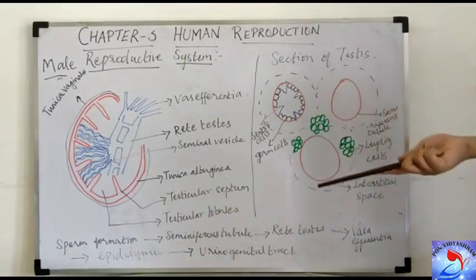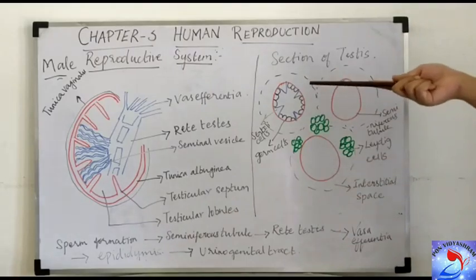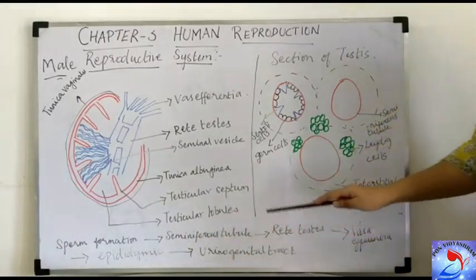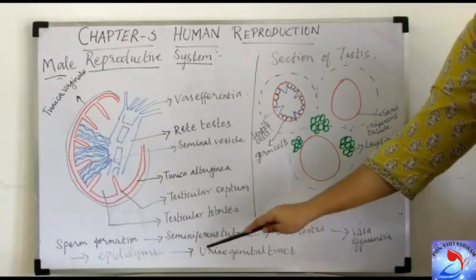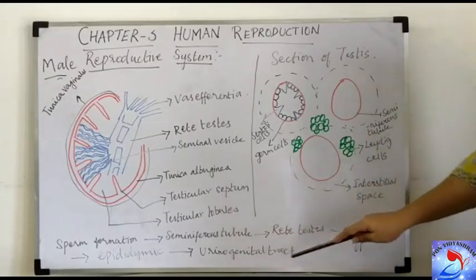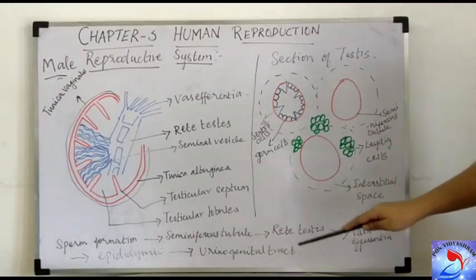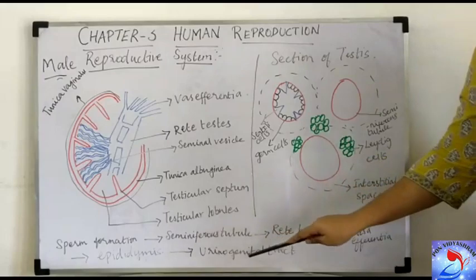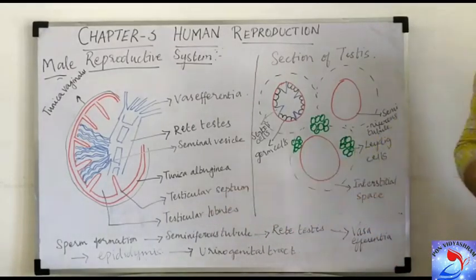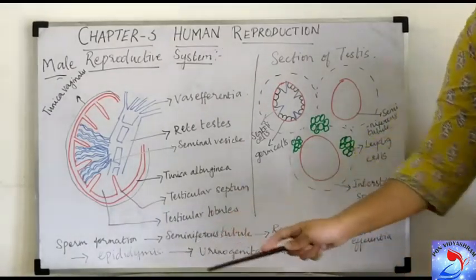The vasa efferentia transport the sperm to the epididymis. The epididymis is present on the posterior side of the testis, and it carries the sperm into the urinogenital tract outside the scrotal sac, conducting it through the urinogenital tract.